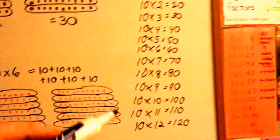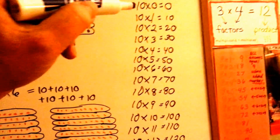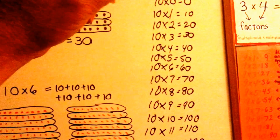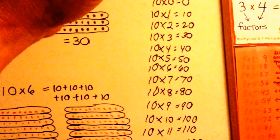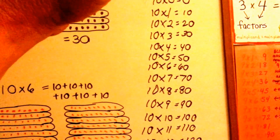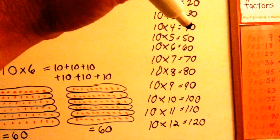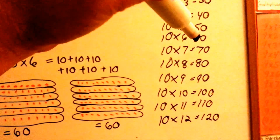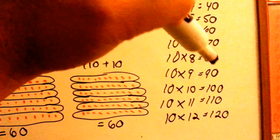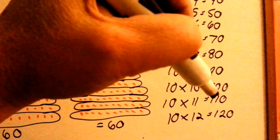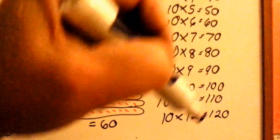Here's the 10 times table. They're fun too: 0, 10, 20, 30, 40, 50, 60, 70, 80, 90, 100, 110, 120.